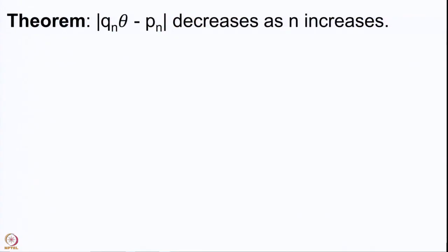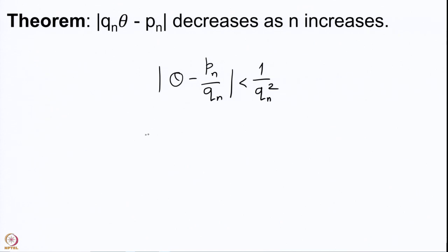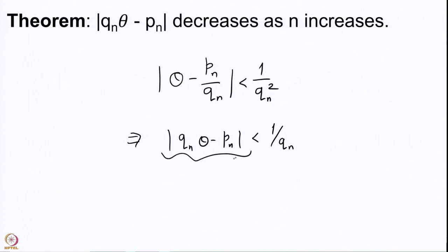Now let me prove an important theorem. We have established that |θ - Pₙ/Qₙ| < 1/Qₙ², which means Qₙ|θ - Pₙ/Qₙ| < 1/Qₙ, going to 0 as Qₙ → ∞. This was Lemma 4 in our proof of the continued fraction expansion. What we want to prove now is that this sequence is actually decreasing: the value for index n+1 is smaller than for index n.